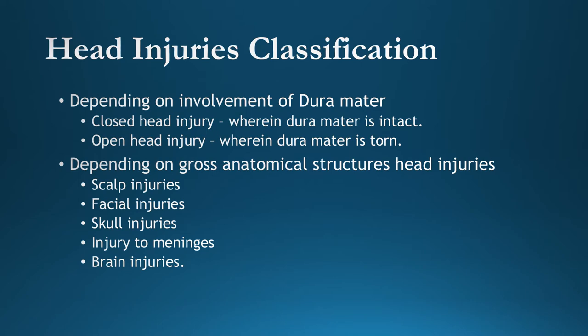First, we learn about head injuries and their classification. Head injuries are the most complicated and tough to understand — the pathology is very complex, and by observing the impact of an external force alone, we cannot easily predict the cause. Classification depends on involvement of the dura mater: closed head injury means the dura mater is intact, and open head injury means the dura mater is torn.